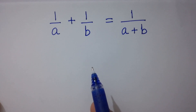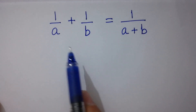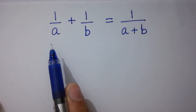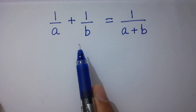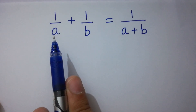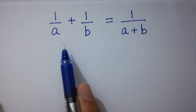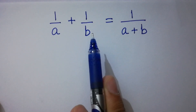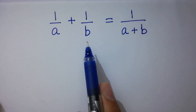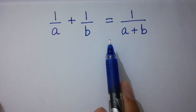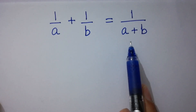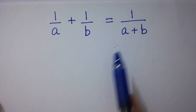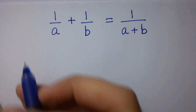Hello friends, find the value of a and b if 1 over a plus 1 over b equals 1 over a plus b. Let's have a solution.